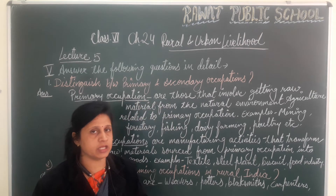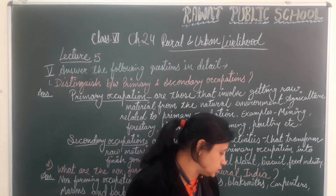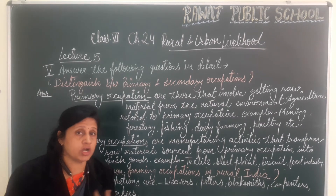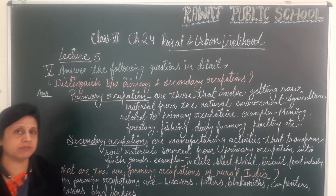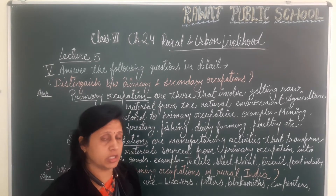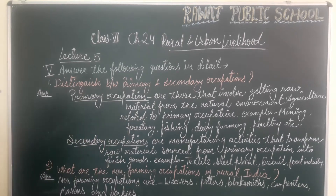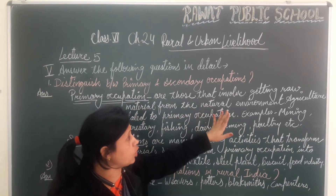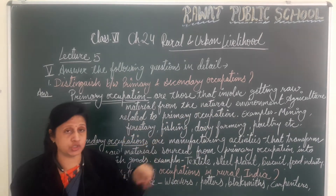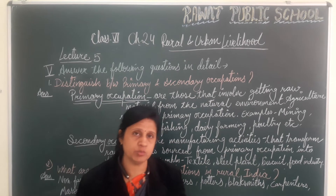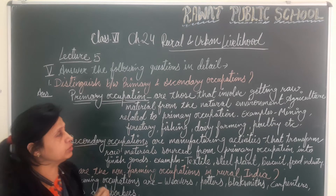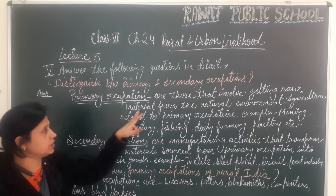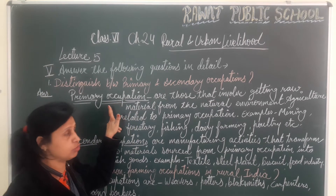Distinguish between primary and secondary occupation and also give examples of each. You need to know what primary and secondary occupation are — what are the definitions, what work we do in primary and secondary occupation, and what are the examples. So first I am explaining primary occupation. Primary occupations are those that involve getting raw material from the natural environment. Whatever raw material is produced comes from the primary occupation using the natural environment.